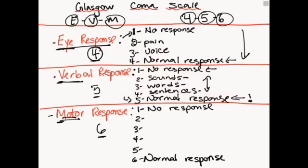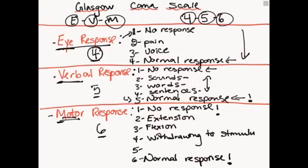Motor response is a little bit more difficult. One is always no response. Six is always a normal response. And the in-between for motor response goes like this: abnormal extension scores two points. One step better than that would be abnormal flexion scoring three points. One step better than that would be withdrawing to stimulus. Five would be responding to pain. And six would be a normal response. So if you said to your patient, 'Can you lift up your legs?', they would be able to lift up their legs.